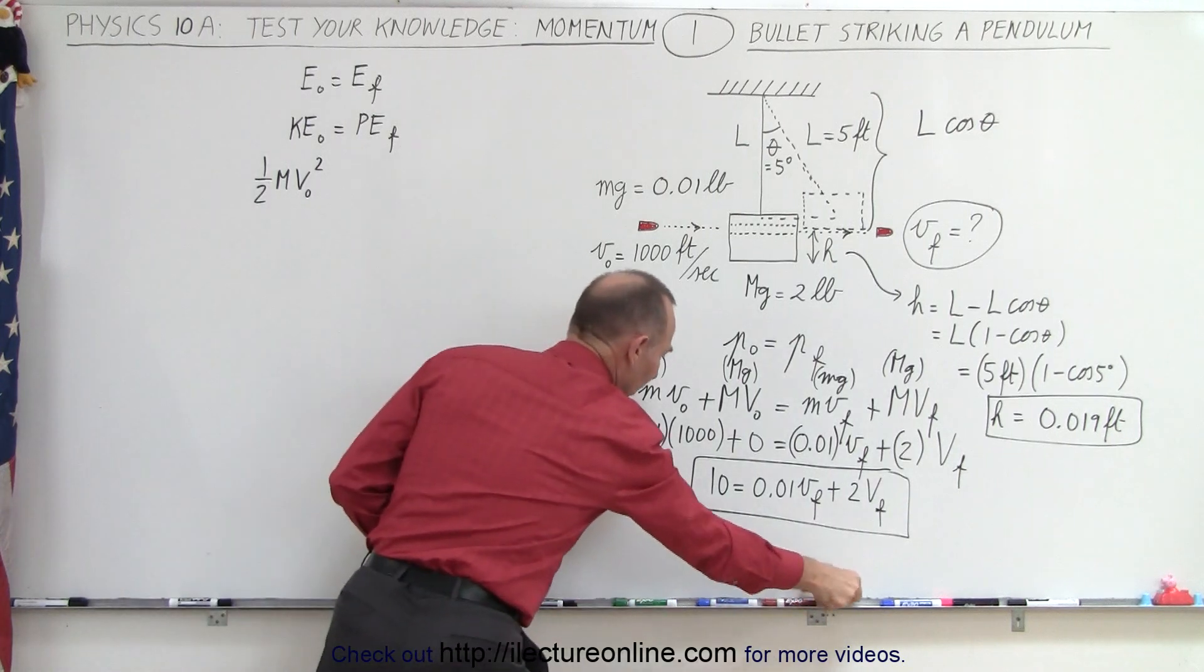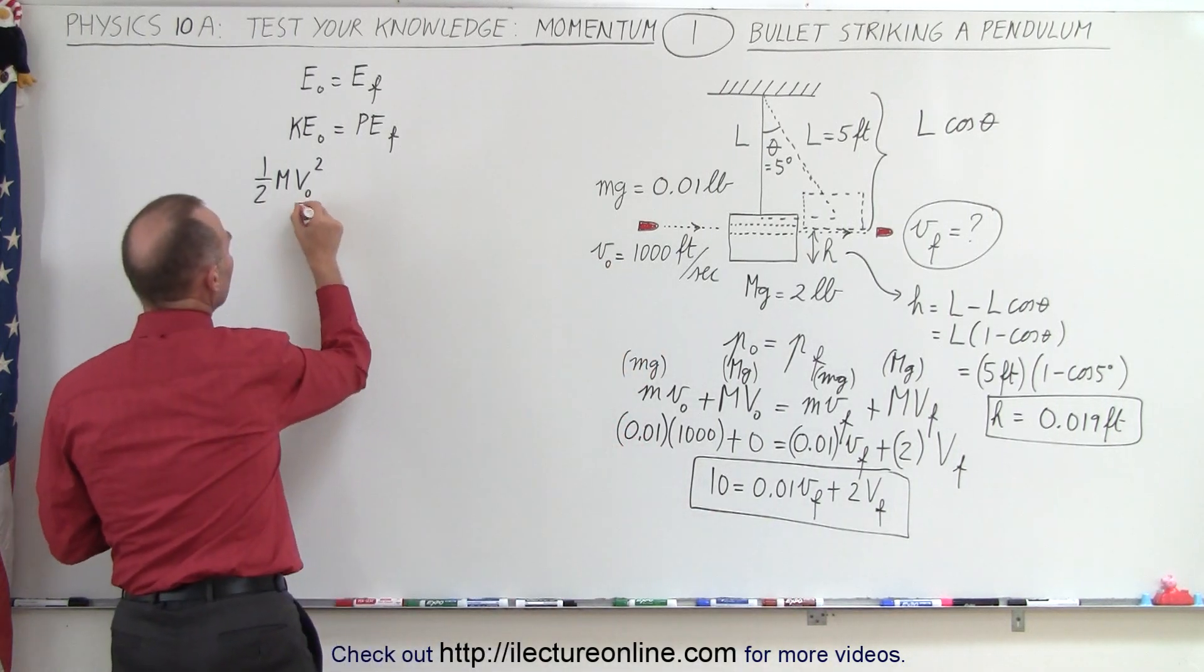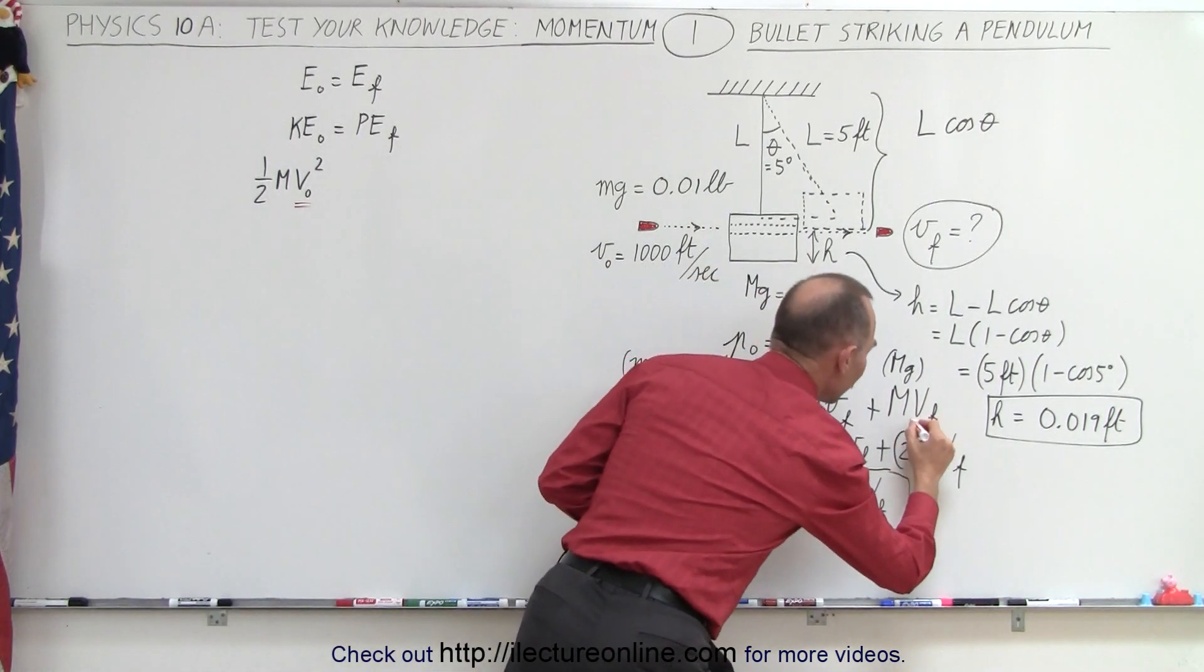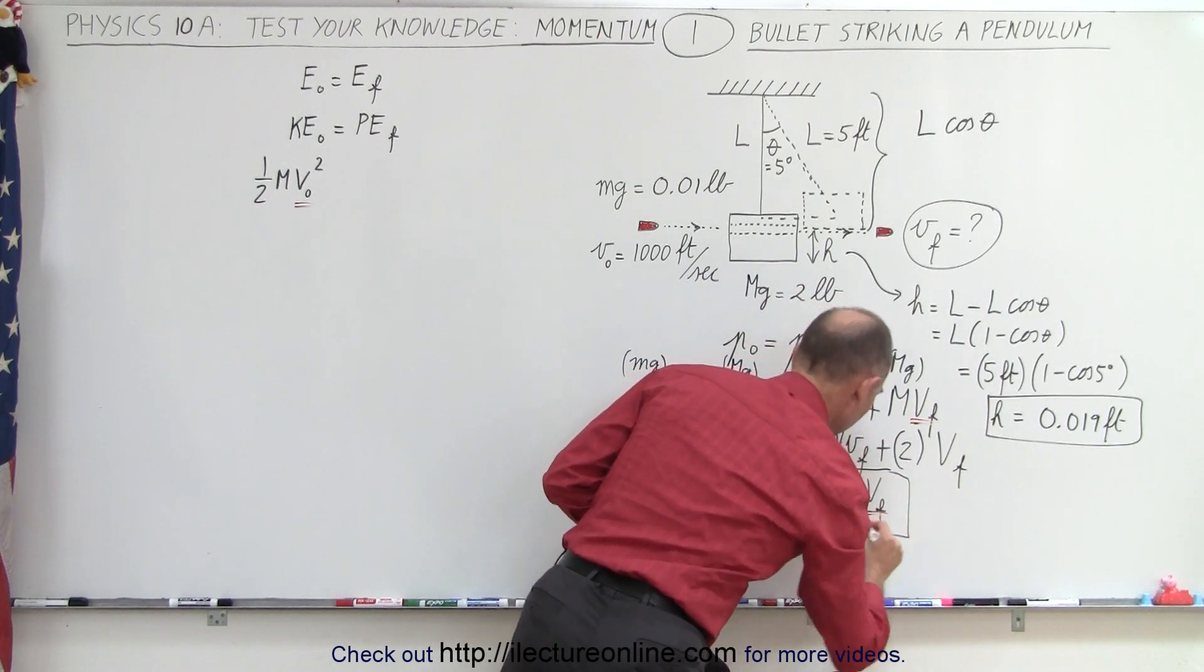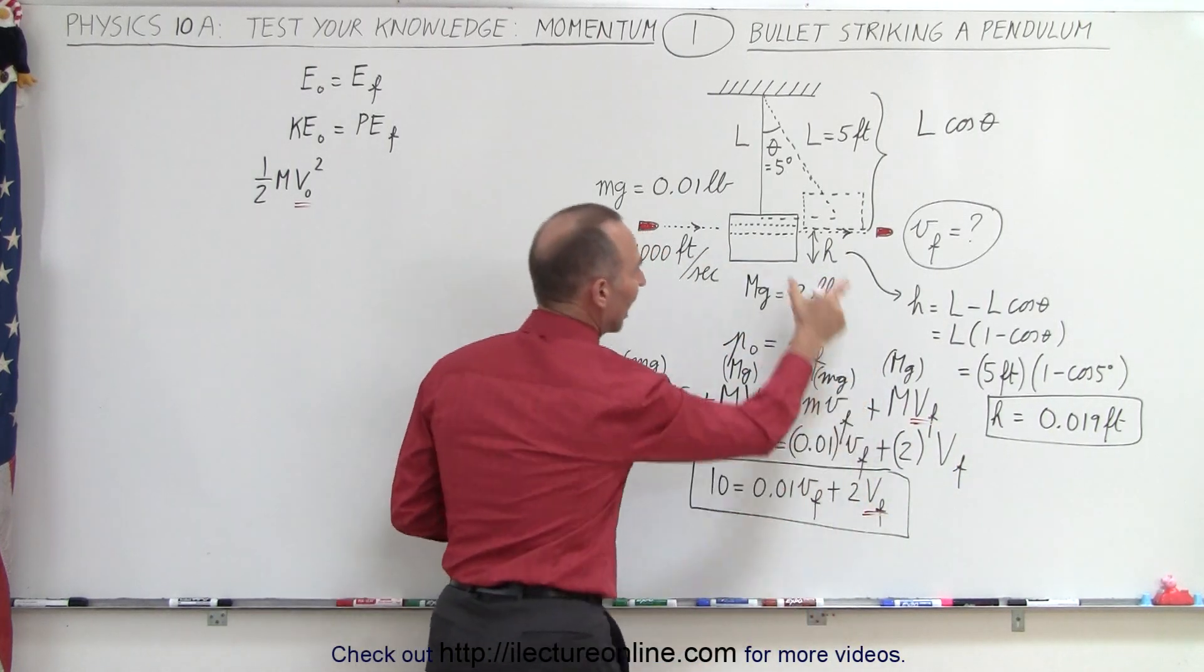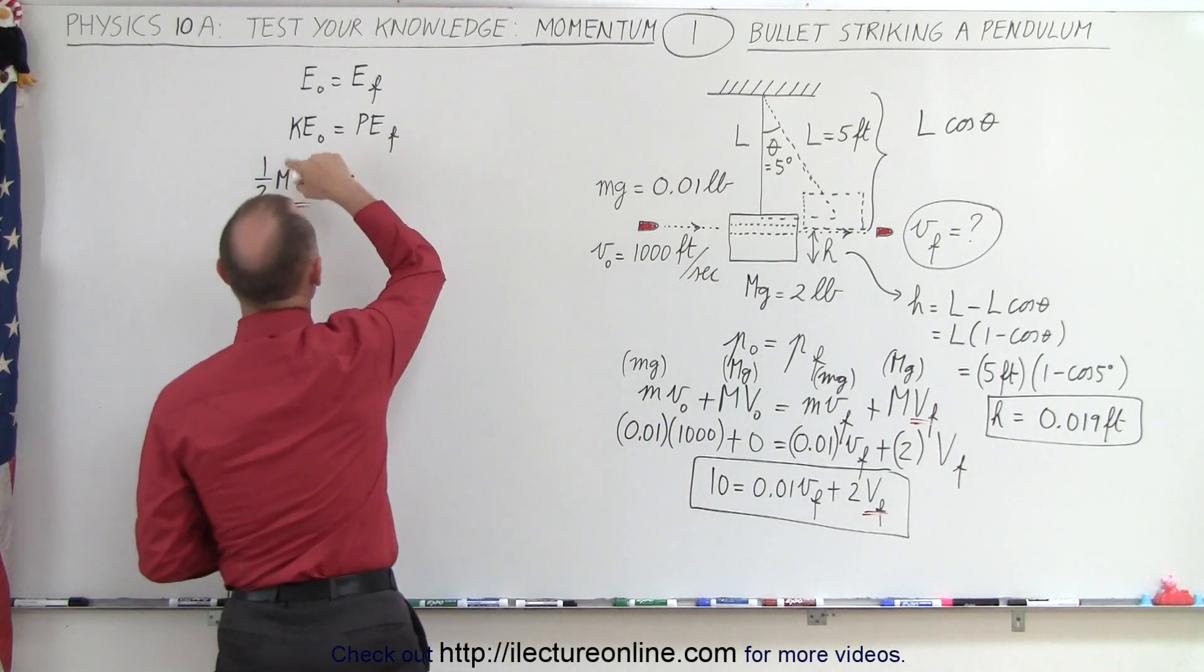Notice that this V initial here is equal to V final in our equation right here. So the final velocity after the strike becomes the initial velocity to the second part of the problem as the block swings upward.